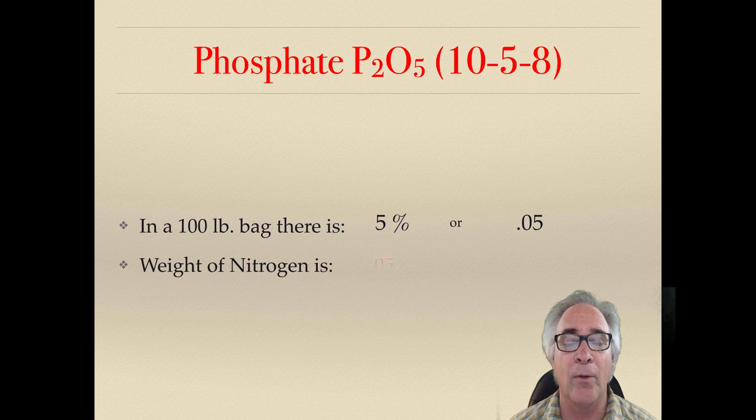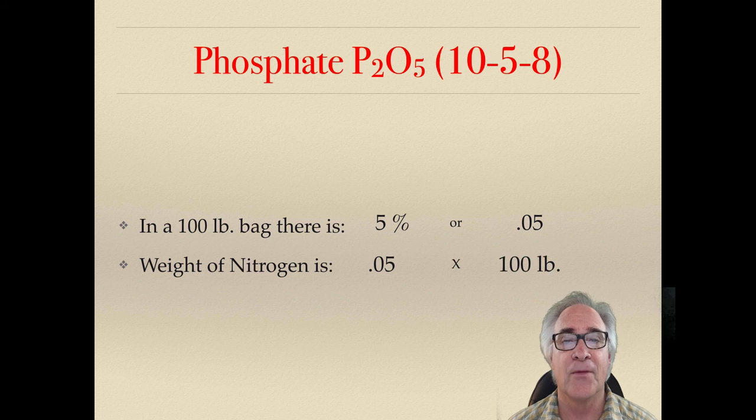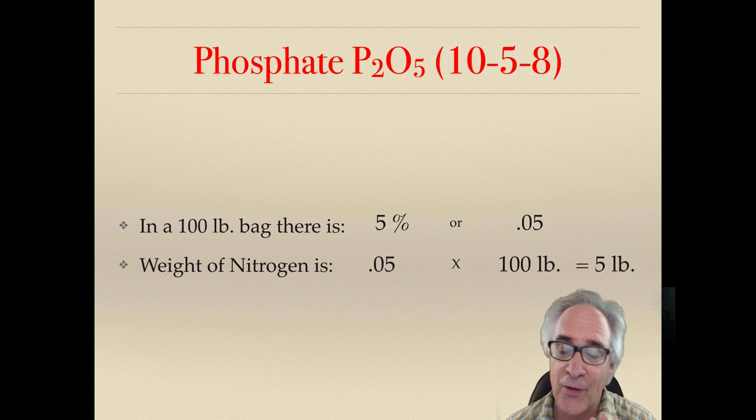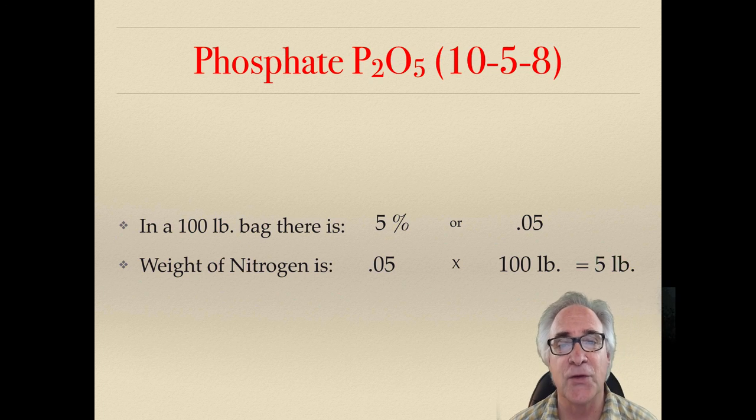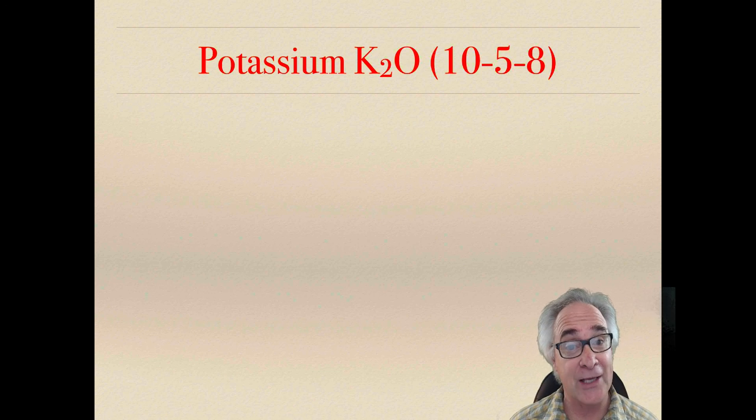And of course, we're going to multiply that .05 by the number 100, and that is going to give us 5 pounds of phosphate in this 100-pound bag. Now again, this is kind of redundant, but we've got one last one.